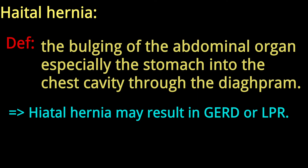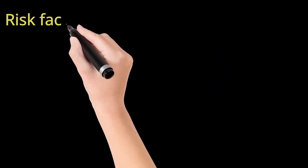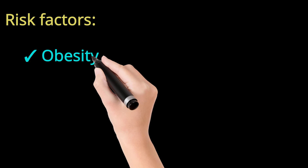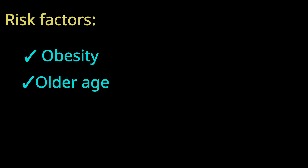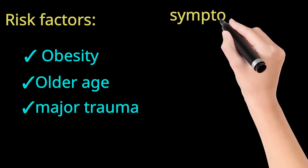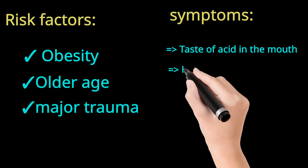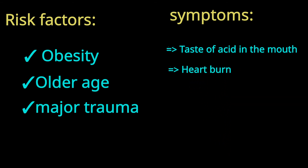Hiatal hernia may result in gastric or laryngopharyngeal reflux, which is the reflux of stomach contents into the larynx and pharynx. Risk factors include obesity — with increasing obesity, the intra-abdominal pressure rises, which can exert pressure on the stomach and cause it to bulge into the chest cavity. Other risk factors include older age, when the strength of the muscles decreases, allowing the stomach to bulge more easily, as well as major trauma.